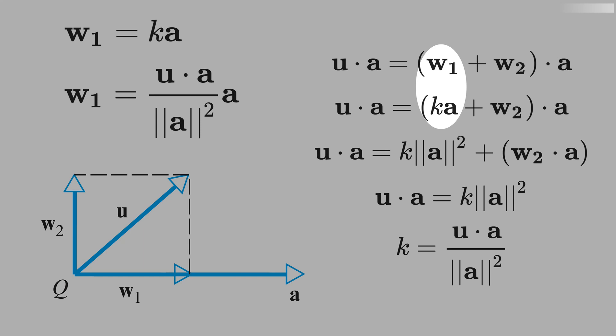Now, let's replace w1 by k·a, and k·a times a, you get k times the square of the norm of a, and we copy w2 times a, and we vanish w2·a because w2 is orthogonal to a.